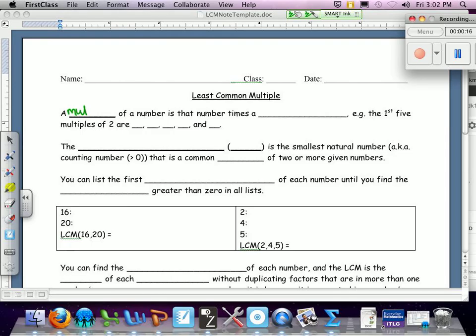A multiple of a number is that number times a whole number. For example, the first five multiples of 2 are 0, 2, 4, 6, and 8.